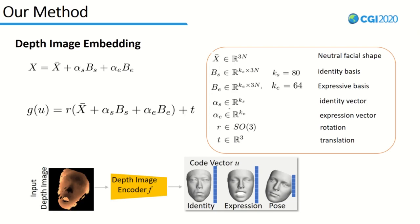The task is formulated as the binding of the input depth images to a low-dimensional code vector that uniquely determines the 3D expressive face. We employ the 3DMM-based parametric model and represent the face X as a linear combination of the shape and expression basis. We also consider the 3D rigid transformation parameters, the rotation and the translation. Given the parametric face model, the encoder performs code inference. We build the encoder based on ResNet to augment multi-level feature fusion and information propagation, where cascade convolutional blocks are used for feature extraction. The feature maps are sent to three branches with fully connected layers for code inference regarding the identity, expression, and pose. Given the identity, expression, and pose codes, the model-based decoder reconstructs the 3D expressive face X from the code vector.